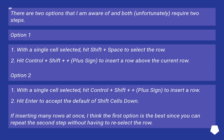Option 2: With a single cell selected, hit Ctrl plus Shift plus the plus sign to insert a row, then hit Enter to accept the default of 'Shift cells down'. If inserting many rows at once, Option 1 is best since you can repeat the second step without having to re-select the row.